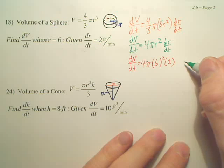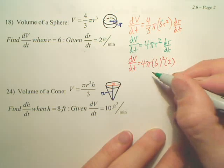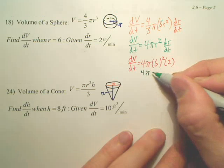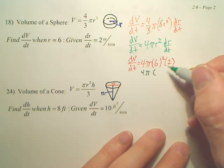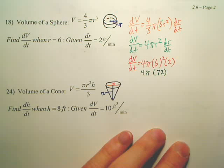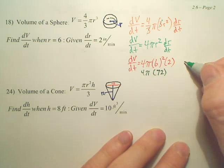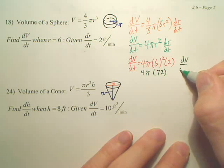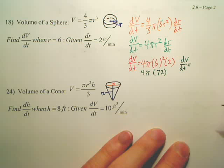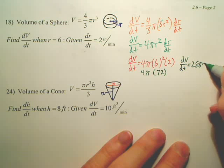So it looks like that becomes 36. So it looks like this is 4 pi times, 36 times 2 is 72. 72. And then, 72 times 4 is 288. So dV/dt is going to be 288 pi.